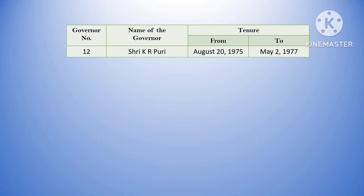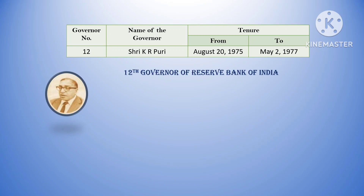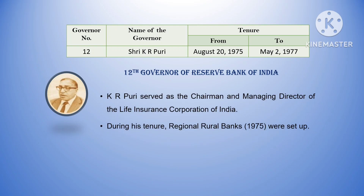The twelfth governor was K.R. Puri. His tenure was from August 20, 1975 till May 2, 1977. He served as chairman and managing director of the Life Insurance Corporation of India before joining as governor. During his tenure, Regional Rural Banks (RRBs) were set up in 1975.